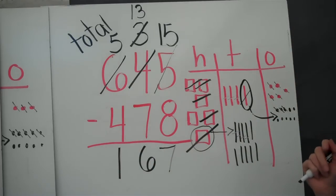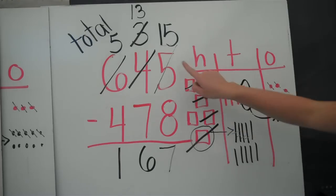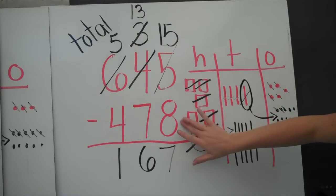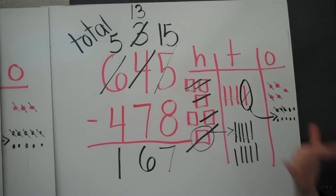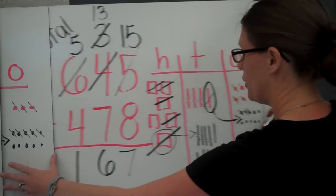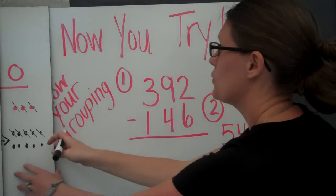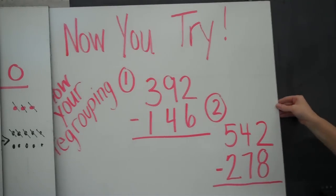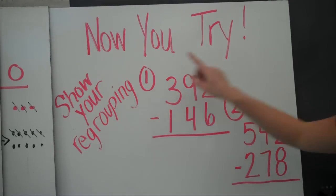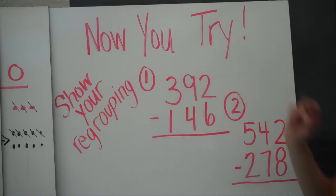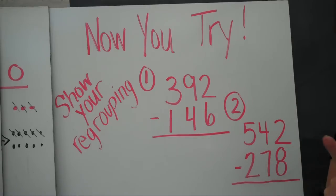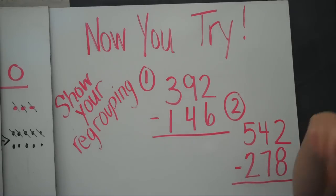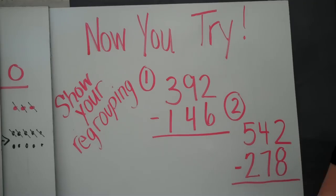167. Again, I regrouped when I was subtracting. Because if I have 5, I can't take away 8, so I need to regroup it so I have enough to take it away. Now it's your turn to try. There are 2 problems. Make sure that you show your regrouping — I should see those new numbers because you're regrouping. In the first one, you're only going to regroup one time. In the second one, you're going to regroup two times. Give it a try.